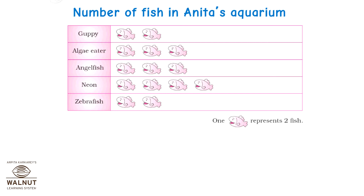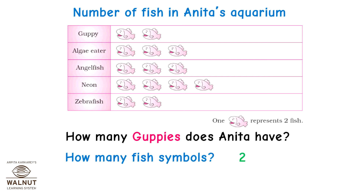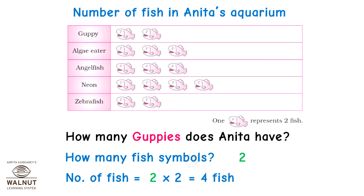Let's answer the questions based on this pictograph. How many guppies does Anita have? See carefully — there are two fish symbols for guppy fish in the table, so Anita must have 2 into 2 equal to four fish of this type in the aquarium.